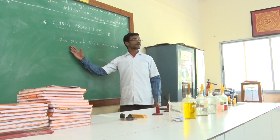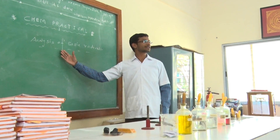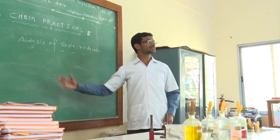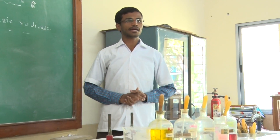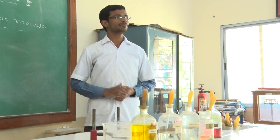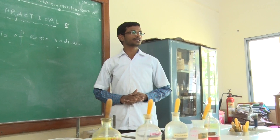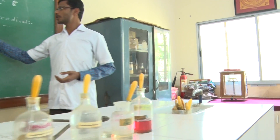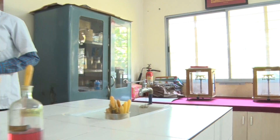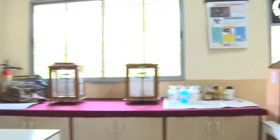Today we are going to analyze basic radicals. A basic radical is also called a cation. Basic radicals contain positive charges. So today we are going to analyze the basic radical given to us.